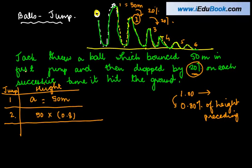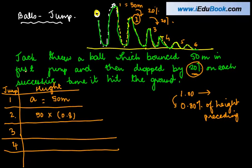Now the third time, how much did it jump? It jumped 80% of what it jumped in the second time. Or we can say it jumped 50 into 0.8 into 0.8 or 80% of this. Or simply write it as 50 into 0.8 to the power 2. Here it is 1.